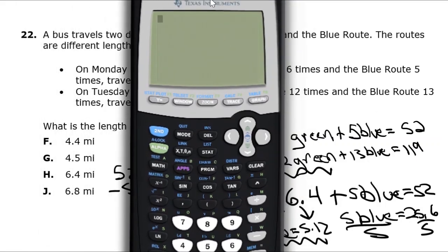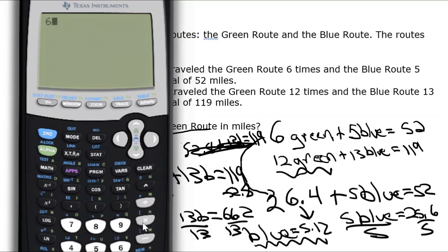We're going to substitute 4.5 in for the green. I'll just do this on the calculator. 6 times 4.5, 27. So we take 52 minus 27, and we're going to divide that by 5 blue. So we get 5. So the blue would be 5 for the top equation. Let's check the bottom equation. 12 times 4.5, we get 54. So we'll do 119 minus 54. And we're going to divide that by 13 blue. And we get 5.